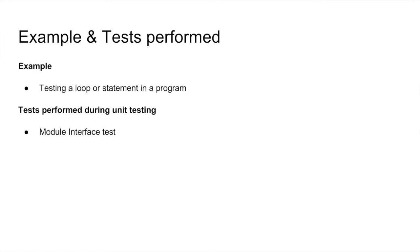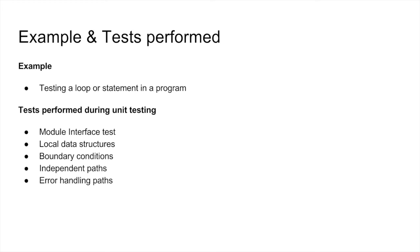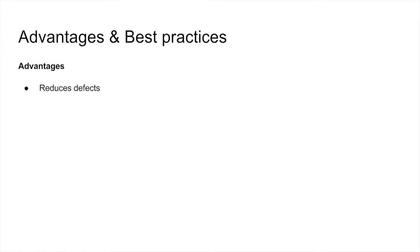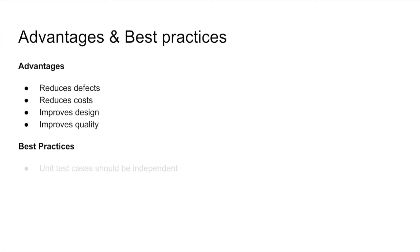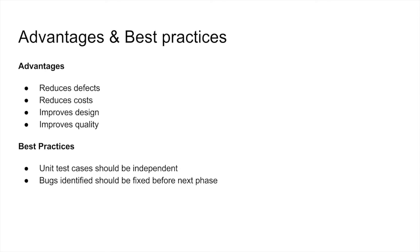Examples of unit testing include testing a function, method, loop, or statement. Module interfaces are tested for proper information flow. Local data are examined to ensure that integrity is maintained. Boundary conditions are tested. All independent parts are tested to see if all are properly executing. Error handling is tested. The advantages of unit testing: it reduces defects in newly developed features when changing existing functionality, reduces the cost of testing as defects are captured in the early phase, and improves design and quality. Best practices include developing unit test cases that are independent, so that any change in requirements does not affect them. Bugs found during testing should be resolved before proceeding to the next phase. We should adopt the test-as-you-code approach to ensure quality software.